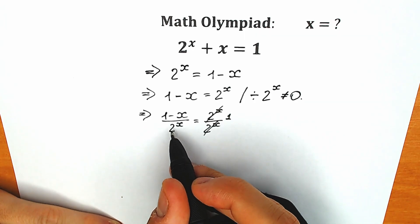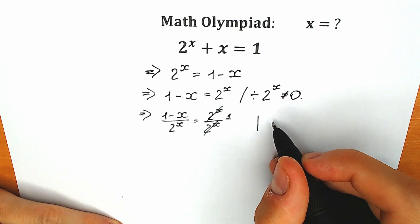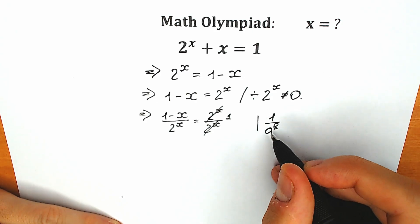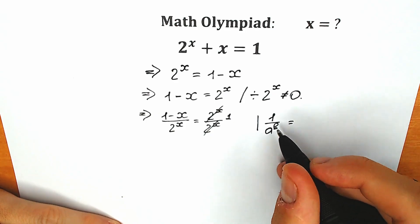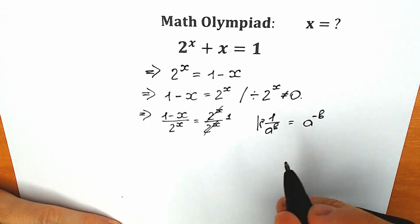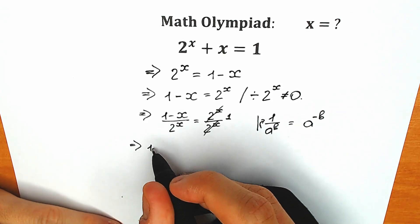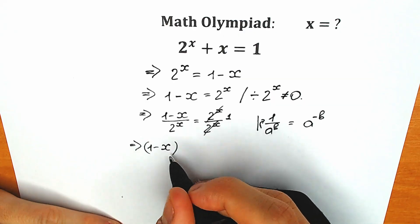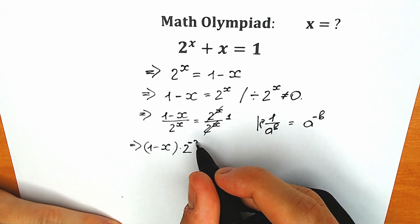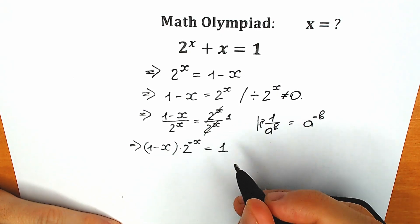On the left side we need to write 2 to the power x in the numerator, but we need to know an important property first. When you have 1 over a to the power b, and you want to write it in the numerator, you just need to change the power to its opposite: a to the power minus b. That's why we can write this as (1 minus x) times 2 to the power minus x, equal to 1.